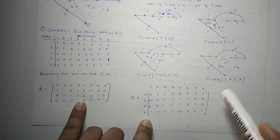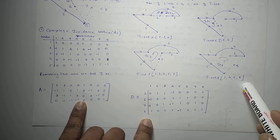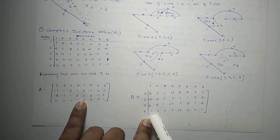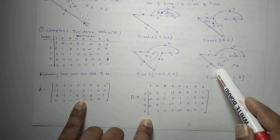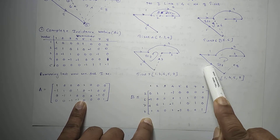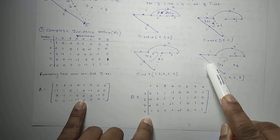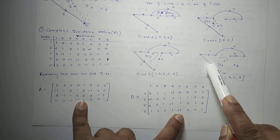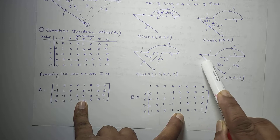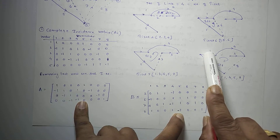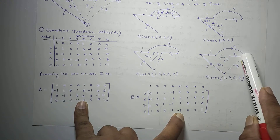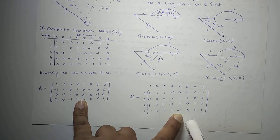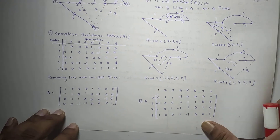For tie set 8, formed by branches 1, 4, 5, and 8: branch 5 is opposite to the link current direction, so it is negative. Branch 1 is in the same direction as the link current, so it is positive. Branch 4 is also positive. This completes the tie-set matrix.